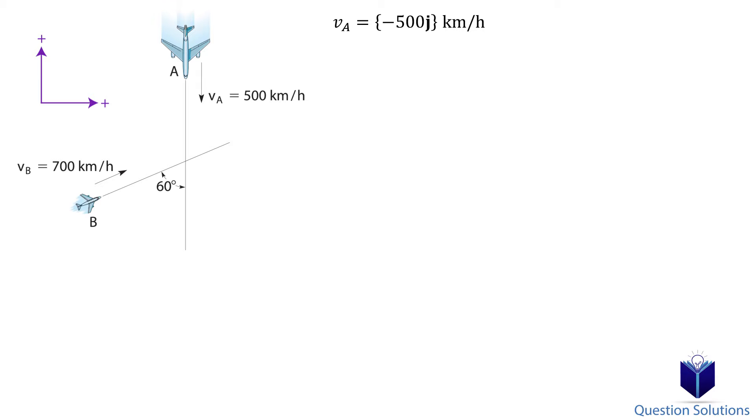For plane B, we see that its velocity can be written in terms of i and j. So we have 700 sin 60 degrees and 700 cos 60 degrees. Let's simplify it.